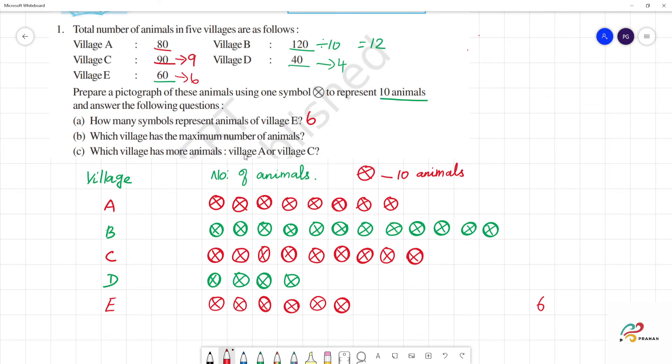Which village has maximum number of animals? We know B is 120 animals. Now, village B. Which animal has more animals? Village A or village C? So, village A is 1, 2, 3, 4, 5, 6, 7, 8 - that's 80. Village A has 80. Next, village C has 90. Which has more animals? Village C has more animals.